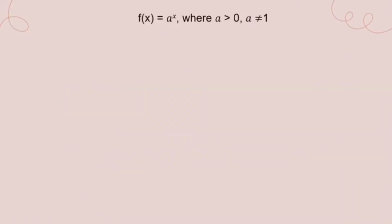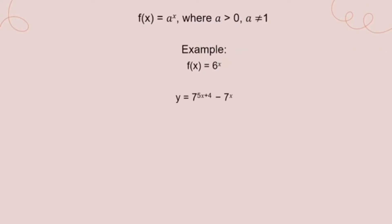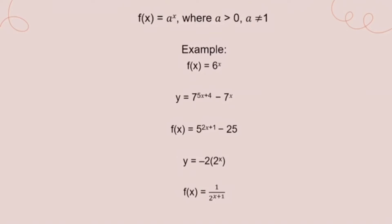Exponential functions can be determined by the equation f(x) = a^x, where a is greater than 0 but a is not equal to 1. Examples include: f(x) = 6^x; y = 7^(5x+4) − 7^x; f(x) = 5^(2x+1) − 25; y = −2 · 2^x; and f(x) = (1/2)^(x+1).